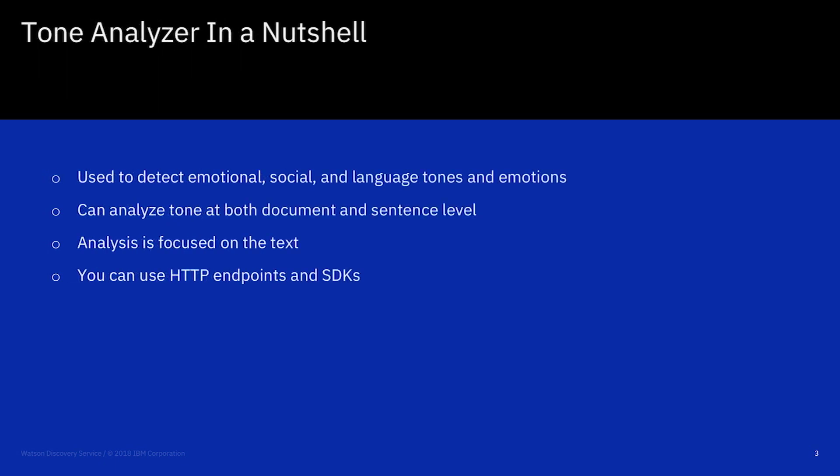Watson Tone Analyzer allows you to detect the emotional, social, and language overtones of documents passed to the service. This allows you to understand how your text is likely to be perceived by a reader, allowing you to change it if necessary to something more appropriate.